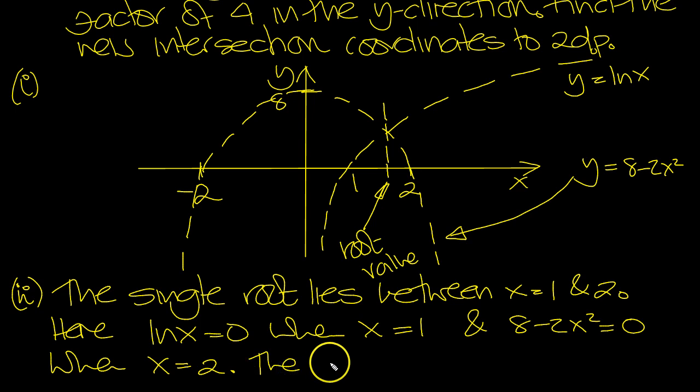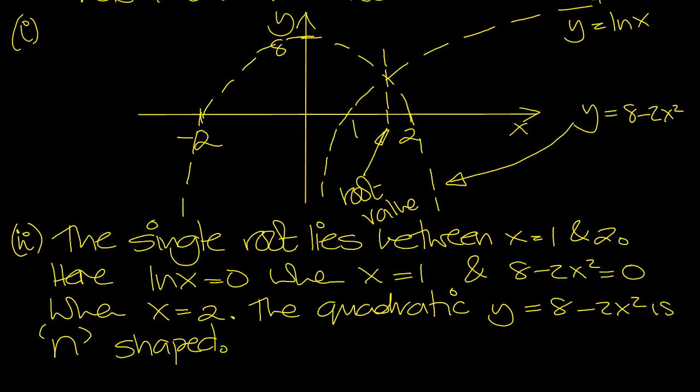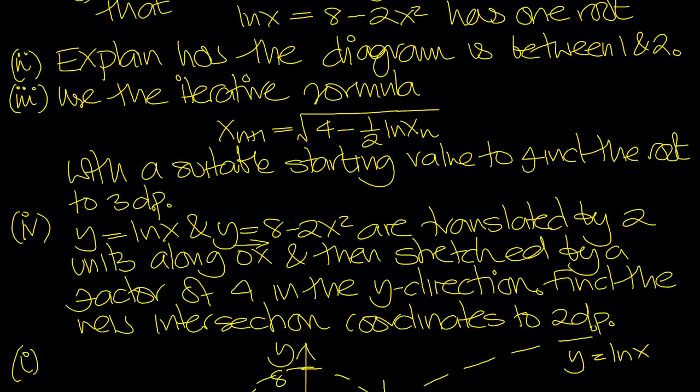The quadratic y = 8 - 2x² is n-shaped. So there's just one root. That's sufficient for part two.